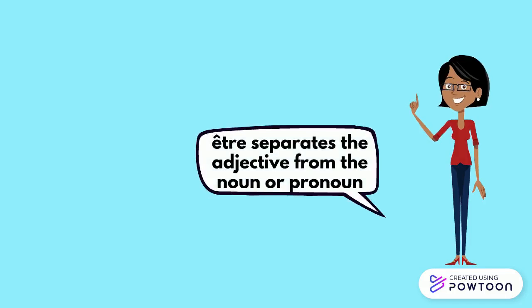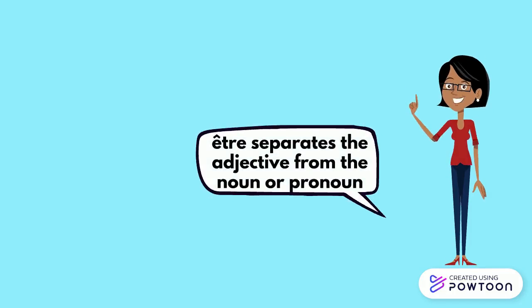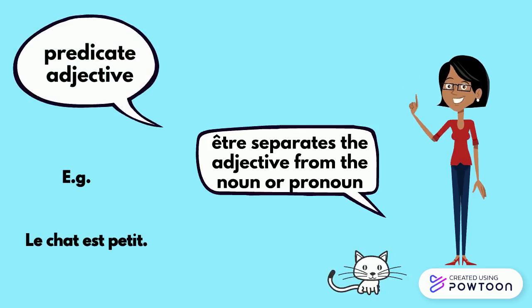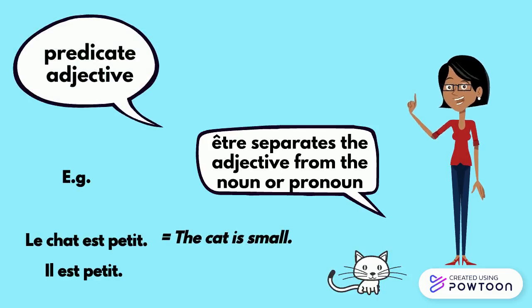When the verb être (to be) or a verb of similar meaning separates the adjective from the relevant noun or pronoun, the adjective is called predicate. For instance, le chat est petit, il est petit — the cat is small, it is small.